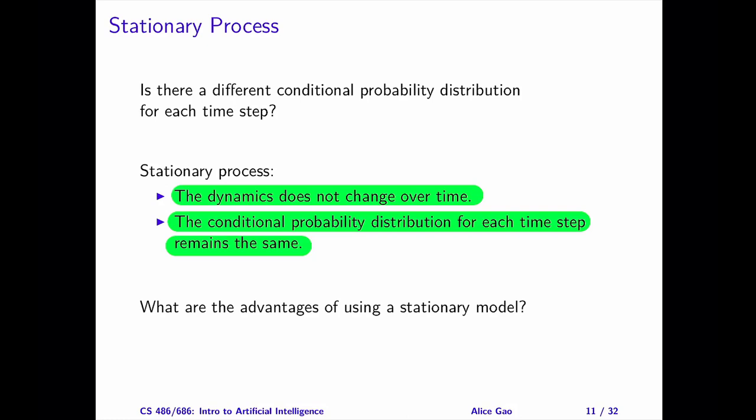There are several advantages to using a stationary model. First, it's simple to specify. We can specify one conditional probability table and use it for every time step. In other words, a stationary model allows us to use a finite number of parameters to define an infinite network. Our umbrella story can run for an unlimited number of time steps, but we can model it using a finite number of transition probabilities.